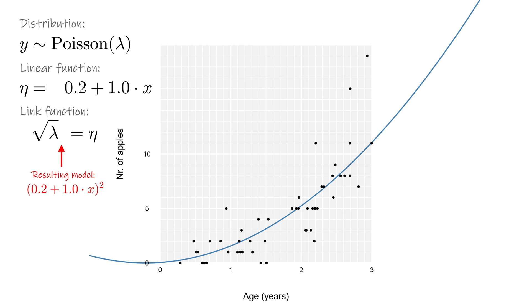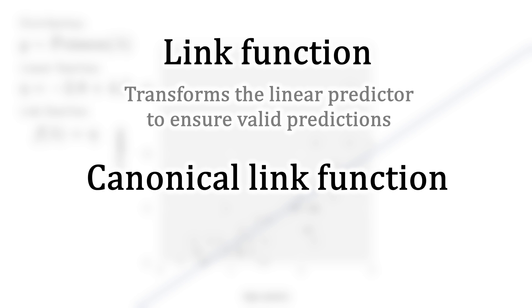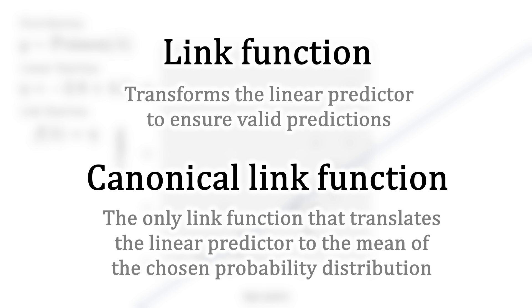But for every probability distribution in a GLM, there is one particular function with an attractive property. The canonical link is the only link function that translates the linear predictor directly to the mean of the chosen probability distribution. Besides having a nice interpretation, the canonical link function is also a lot easier to work with. Something you'll see for yourself once we get to GLM regression tables.